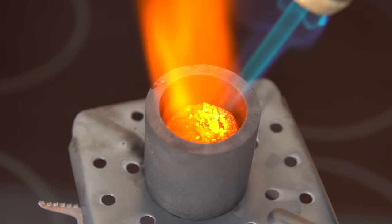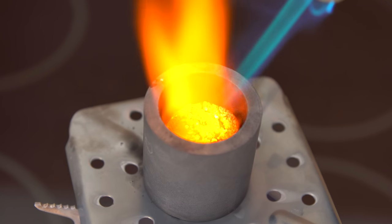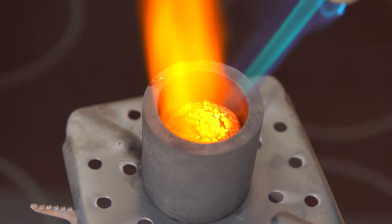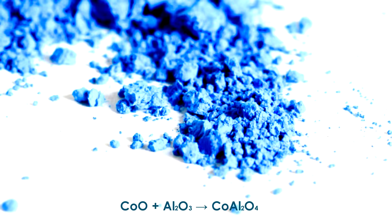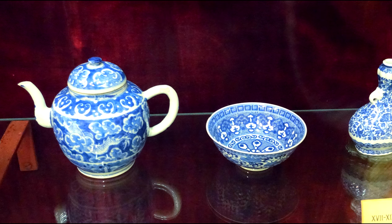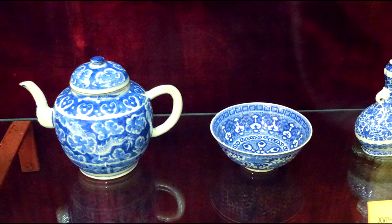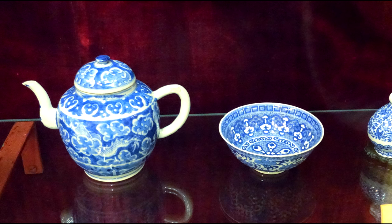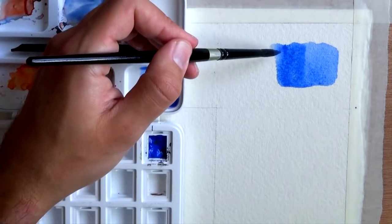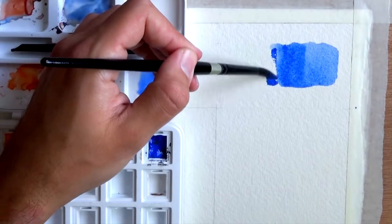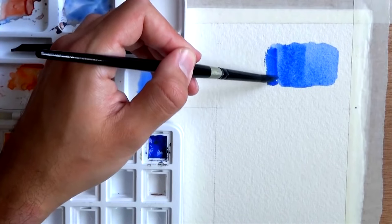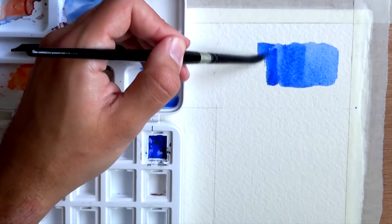If this oxide is heated up with aluminum oxide to 1200 degrees centigrade, this reaction will produce a blue pigment — cobalt blue — one of the first pigments used for painting porcelain in ancient China. It is still used to produce some dyes for artists.